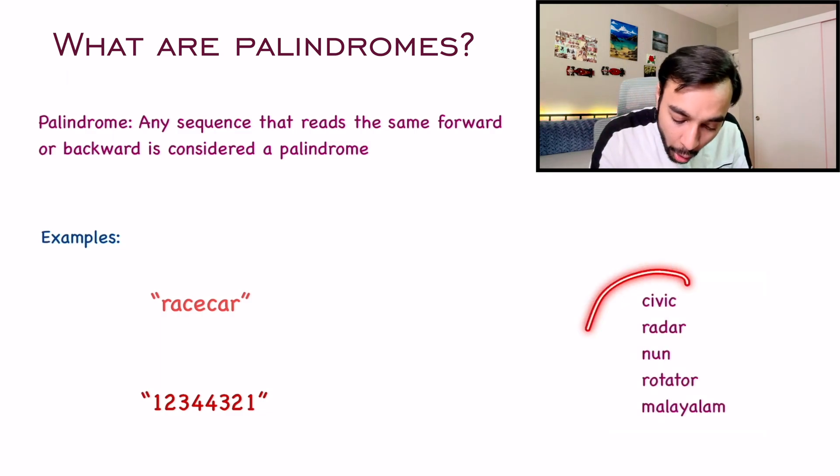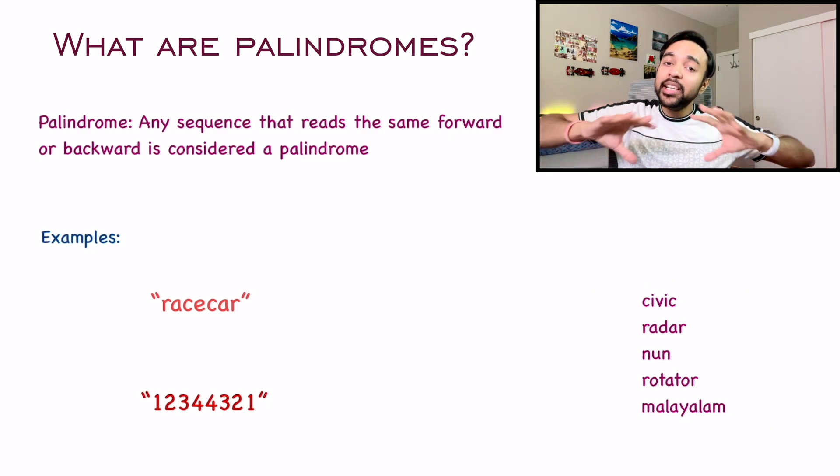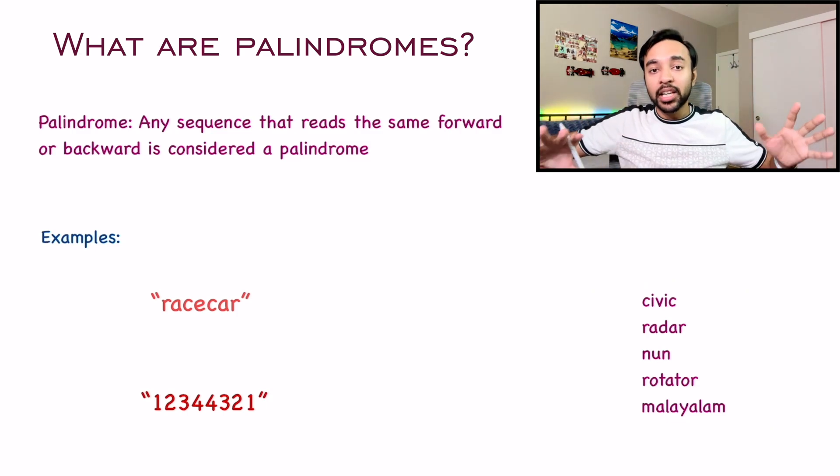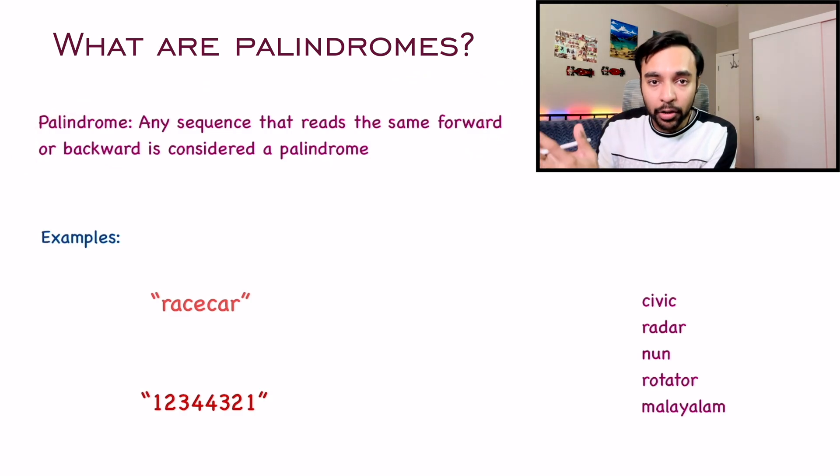And notice all of these different strings, they are all palindromes. Similarly, you can find a lot of examples and it is not necessary that palindromes have to be characters of the alphabet. You can make them with any character. You can make them with special symbols also. Just this property should be true.